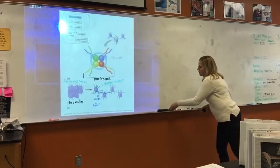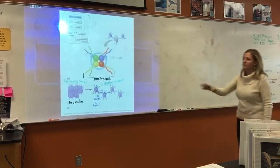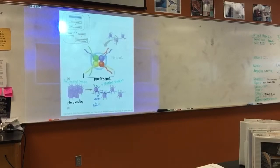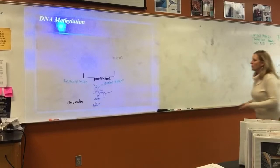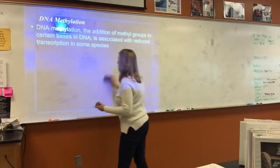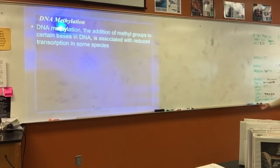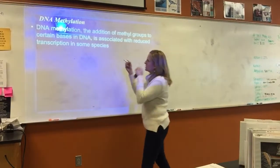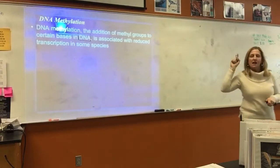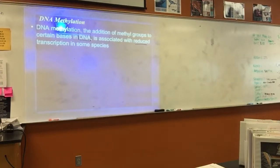So the first thing — when we looked at that overview picture — it said the gene has to be available for transcription. This is what we're talking about: it has to be open and available to transcribe, and that is done by the addition of acetyl groups. On the flip side, there's something called DNA methylation. In DNA methylation, the addition of methyl groups to certain bases in the DNA is associated with reduced transcription in some species.